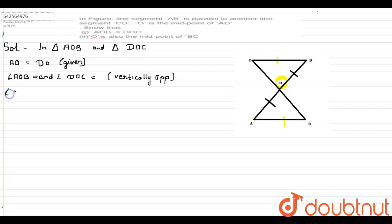angle OAB is equal to angle ODC, and the reason is they are alternate interior angles.